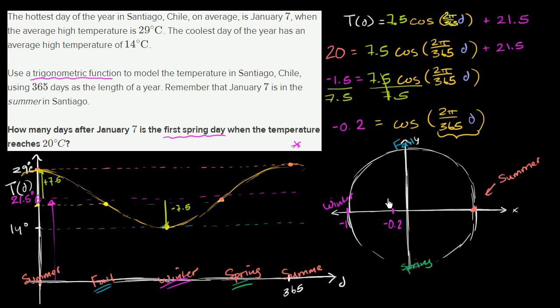And notice, there's two angles that get us there. There's this angle right over there, and then there's also this angle, which is going even further. Or another way you could think about it, you could go backwards to get to that angle. And then if you wanted to go all the way around to the next spring, you could add 2π to it.